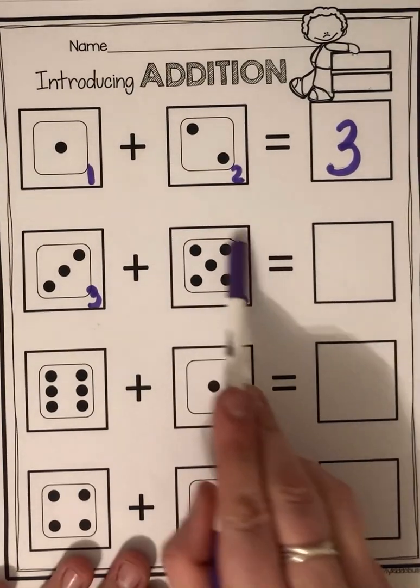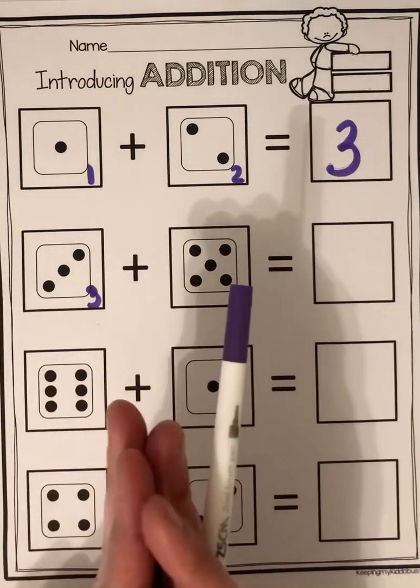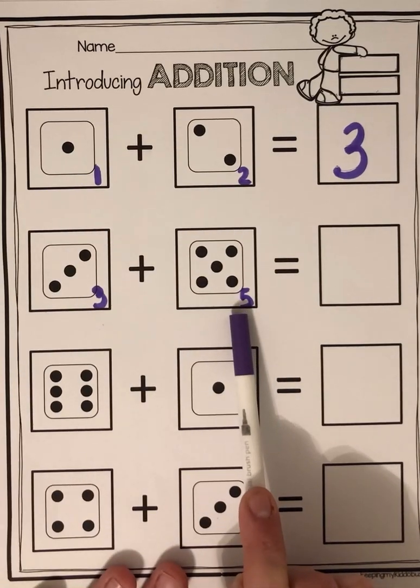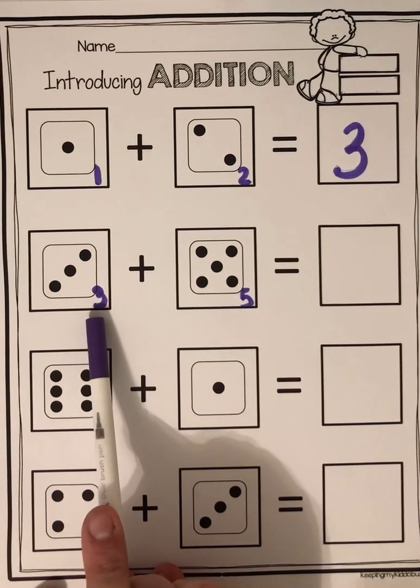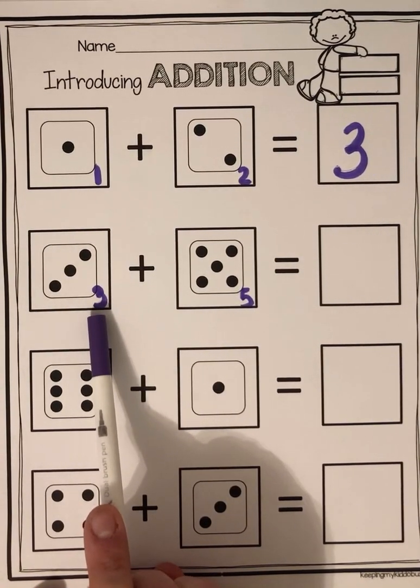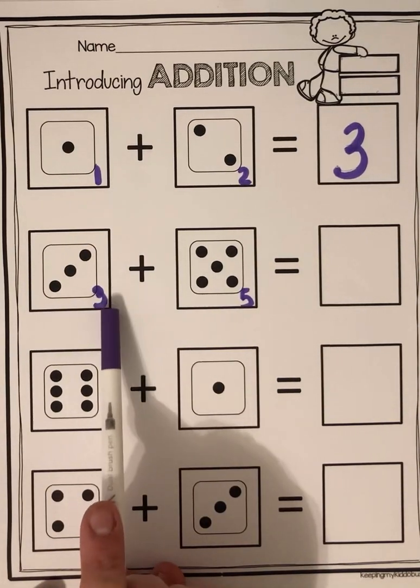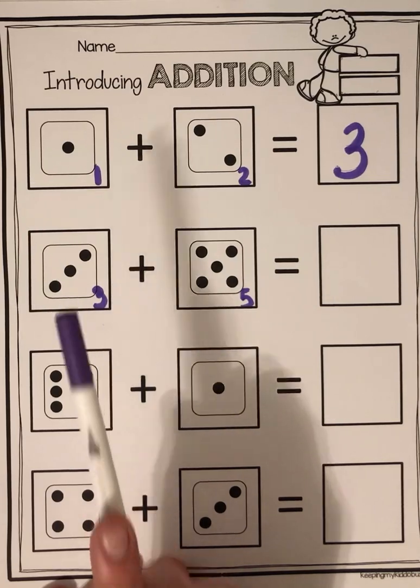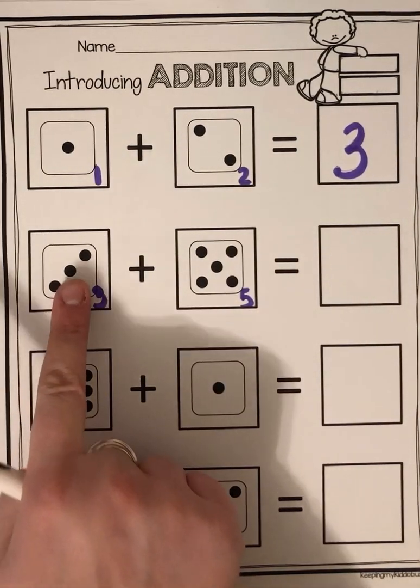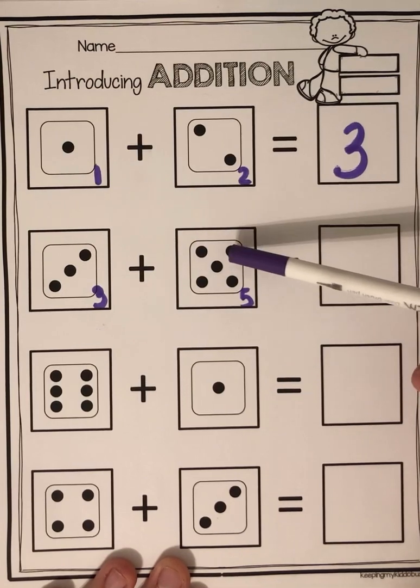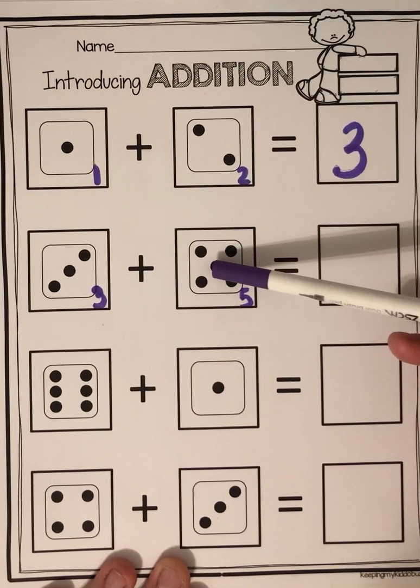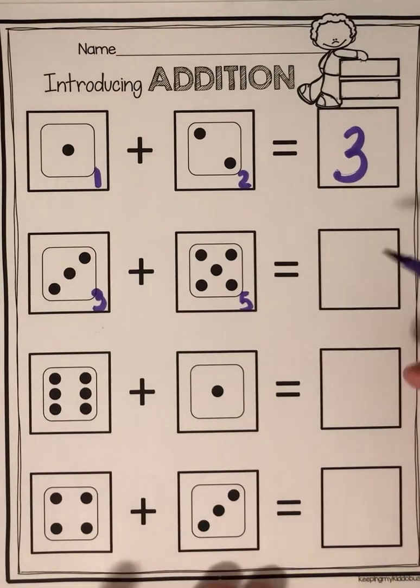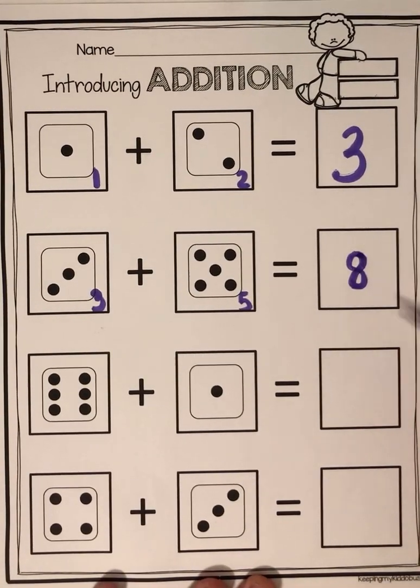Three plus five. Remember plus means we're adding. They're joining together. And equals means all together. How many is there? We already know there's three dots over here. One, two, three. So I'm going to count on what number comes after three? Four. So I'm going to point and say three, four, five, six, seven, eight. So three plus five equals eight.